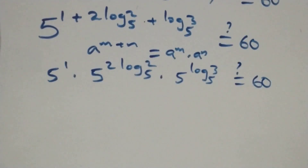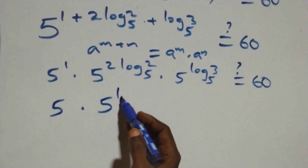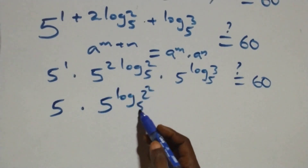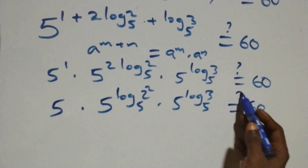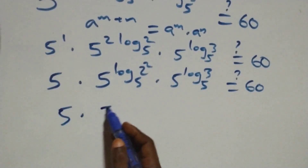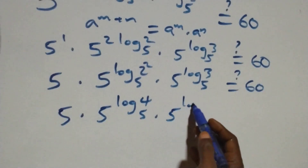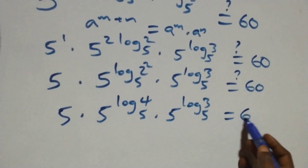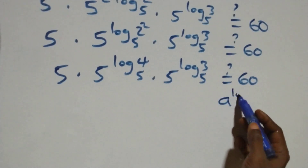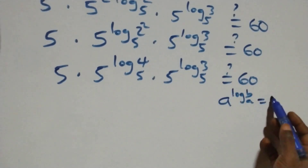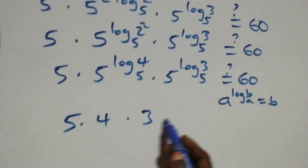We apply the law of indices: a^(m+n) equals a^m times a^n. So we have five raised to the power one, times five raised to the power two log base five of two, times five raised to the power log base five of three. Using the log law a^(log_a b) equals b, the second factor becomes two squared which is four, and the third factor becomes three. So we have five times four times three.